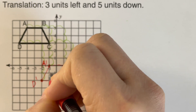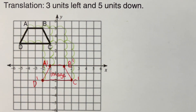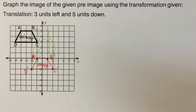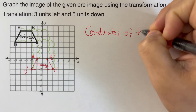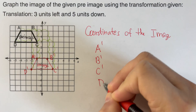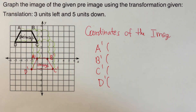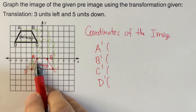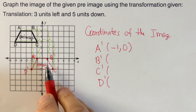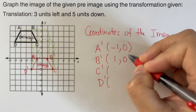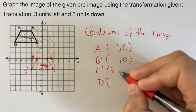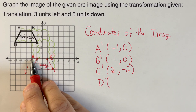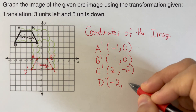So we can go ahead and determine the coordinates of the image. Our A prime is negative one, zero. Our B prime is on one, zero. Our C prime is on positive two, negative two. And our D prime is on negative two, negative two.